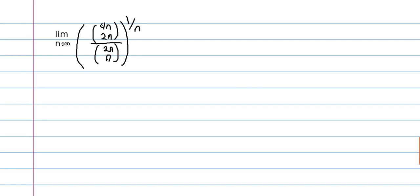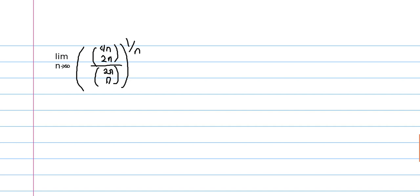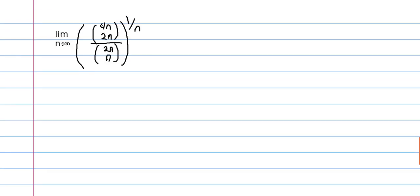But more than that, if you consider f of n to equal 2n choose n, then you're looking at f of 2n over f of n. That's what I'm trying to get at.